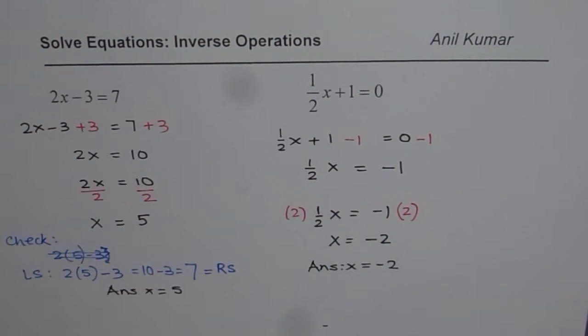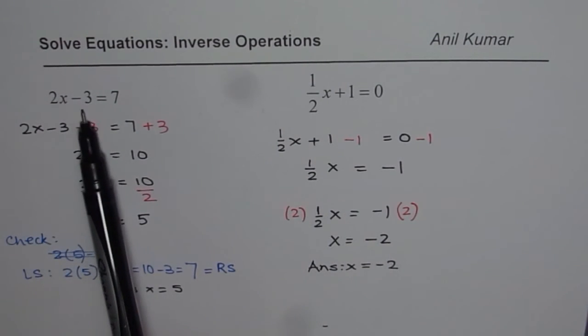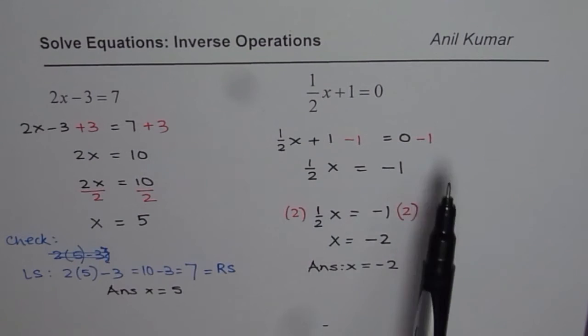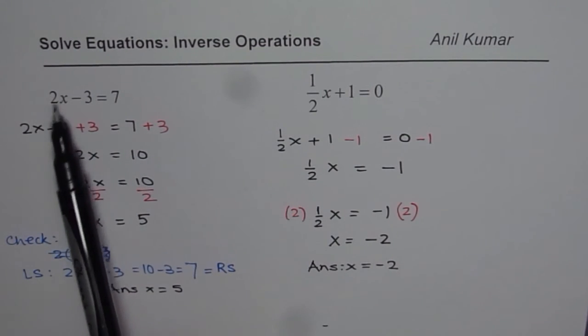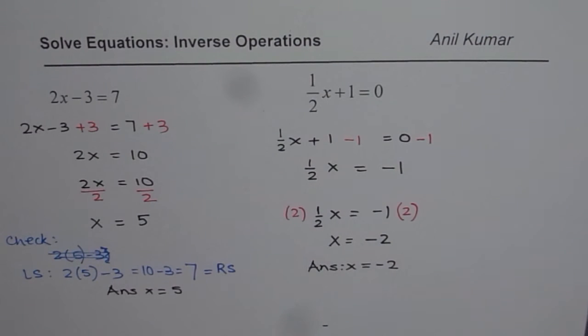So if there is negative 3, add 3 on both sides. If there is positive 1, take away 1 from both sides. If there is multiplication, inverse is division. We divide by 2. If there is division, multiply by the same number on both sides and solve your equation. I hope that helps.